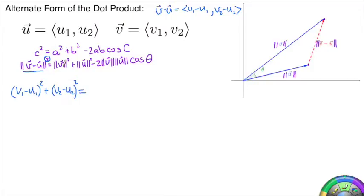So we're going to get v1 minus u1, all squared, plus v2 minus u2, all squared, that'll take care of the left-hand side, is equal to, well then it's the magnitude of v and the magnitude of u. Well, that's just u squared 1 plus u squared 2, v squared 1 plus v squared 2.